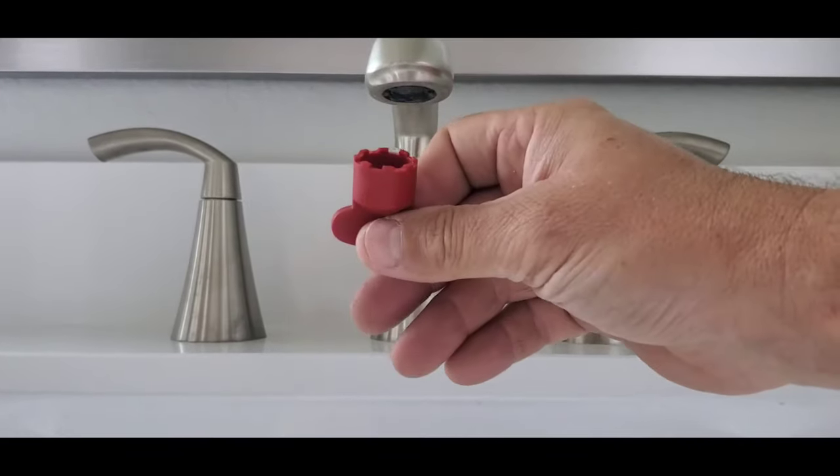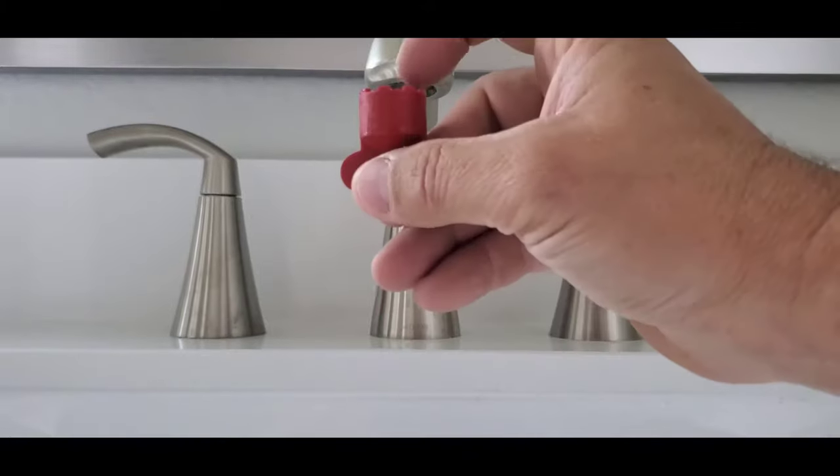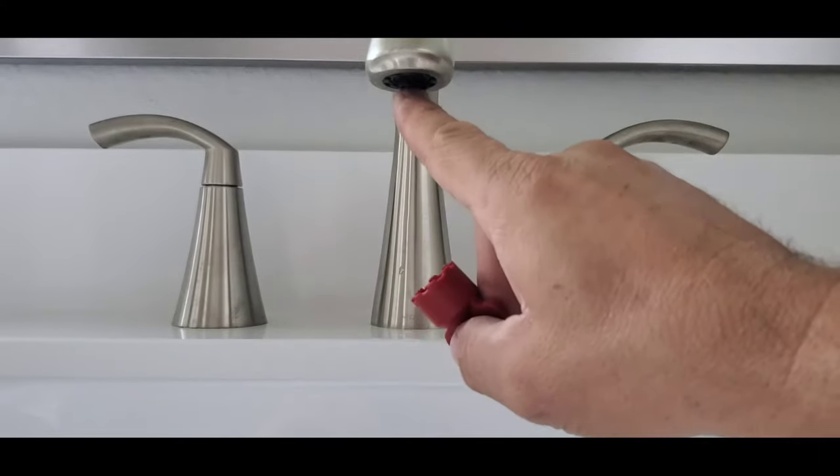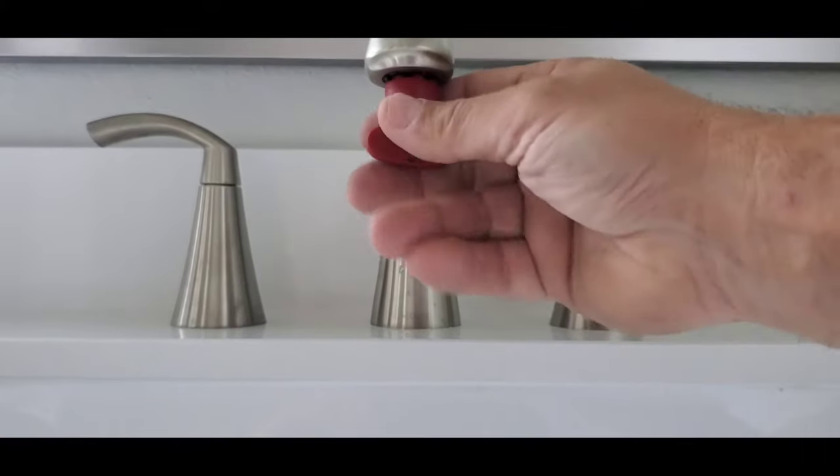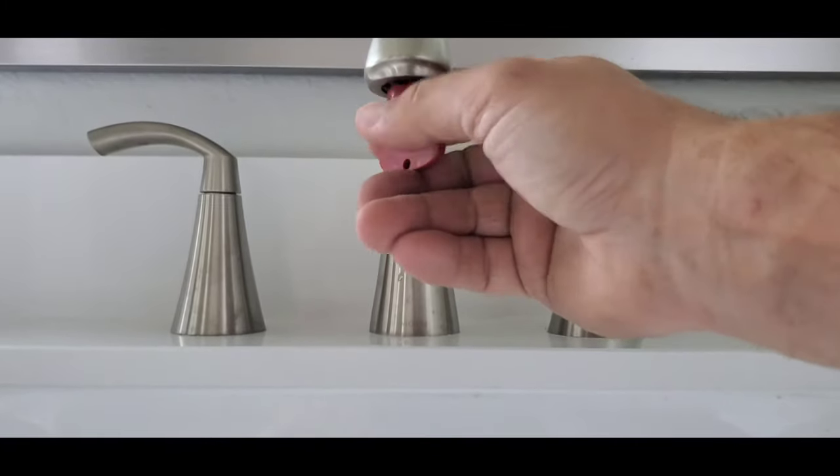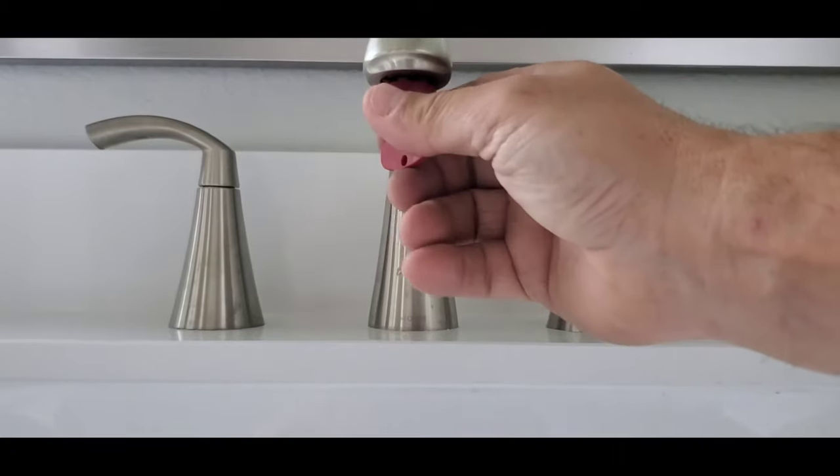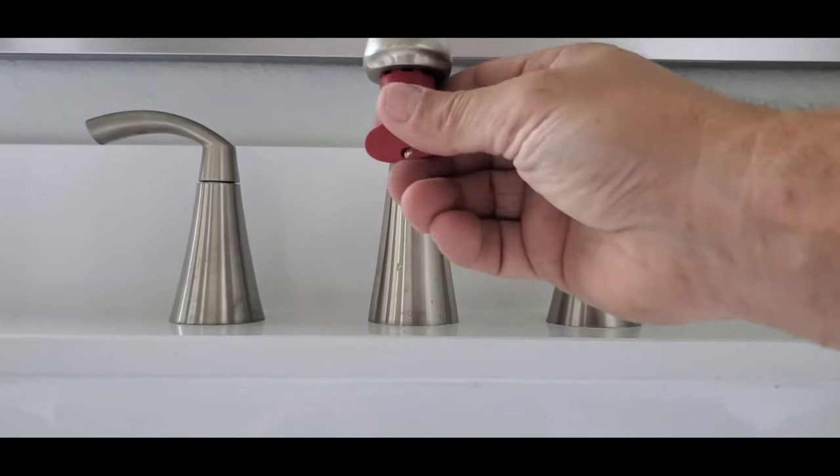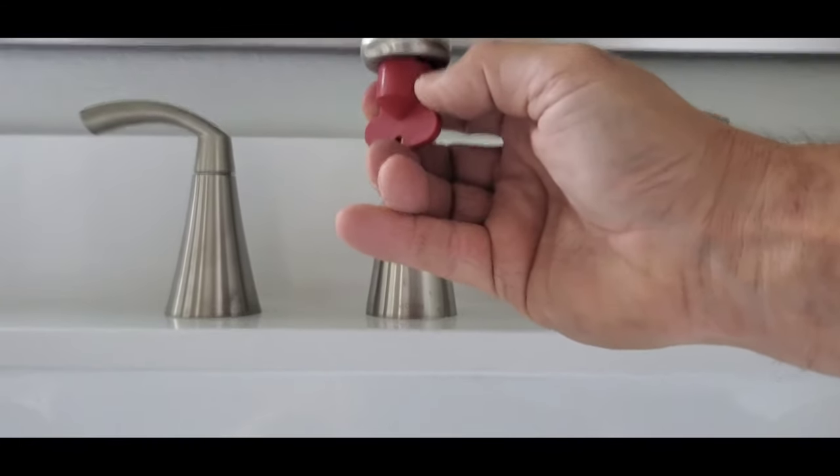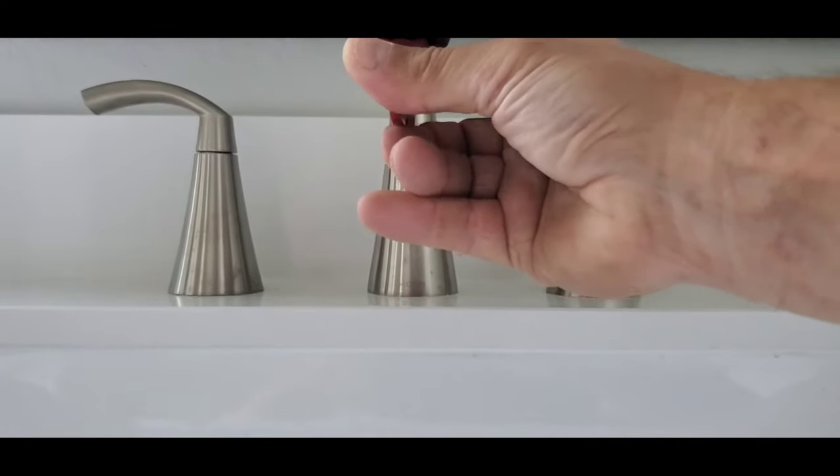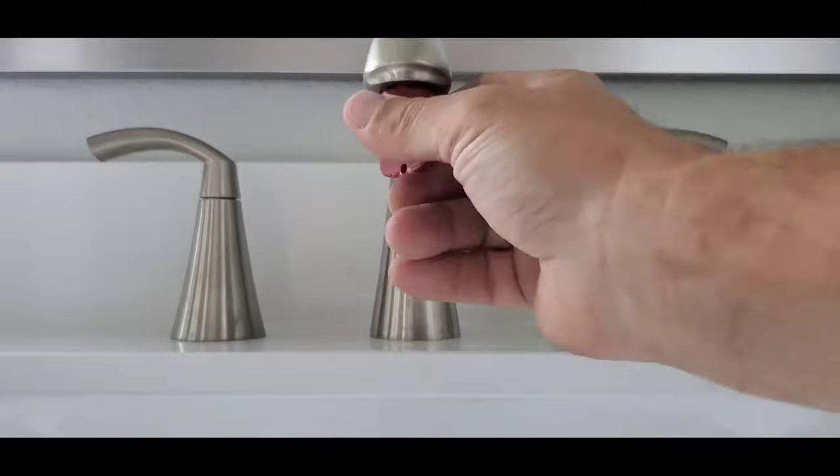To remove it, you can see it has teeth. The aerator has basically the same profile at the bottom here, and you just kind of get it in there. It's a little challenging doing with one hand while holding a camera, but essentially you get those teeth kind of locked in, and then you just start turning.